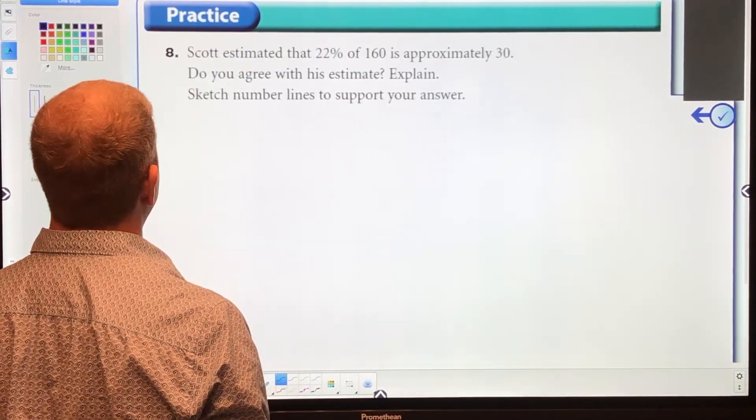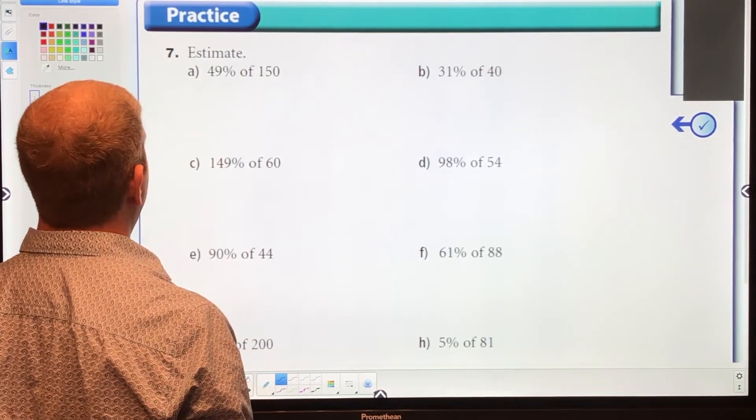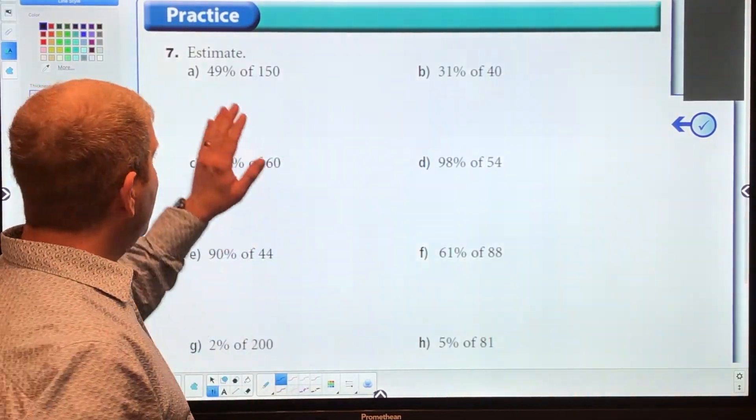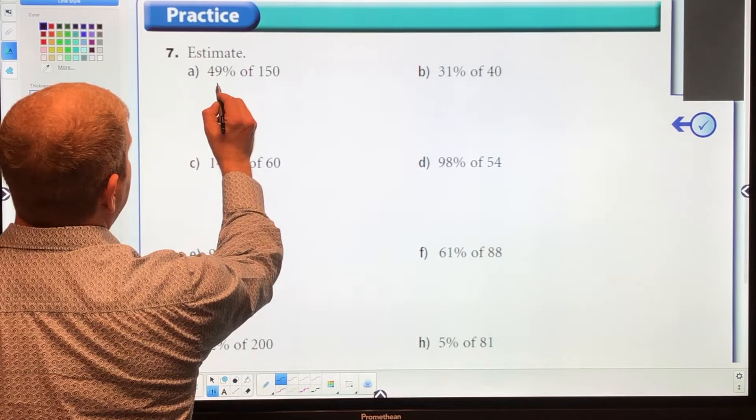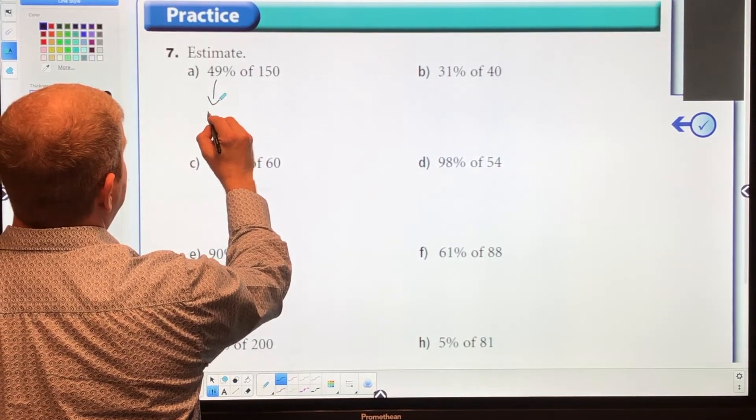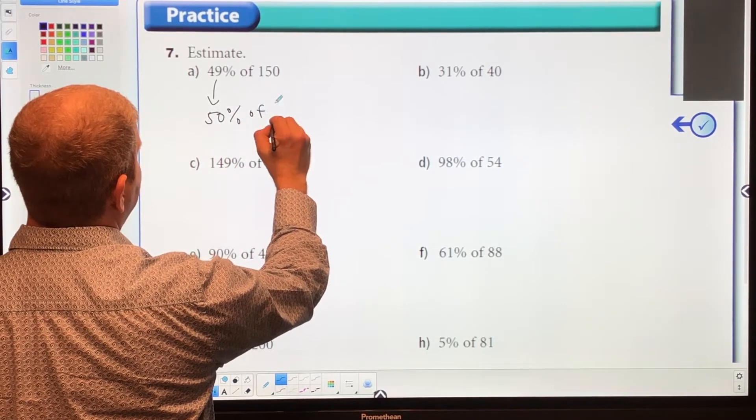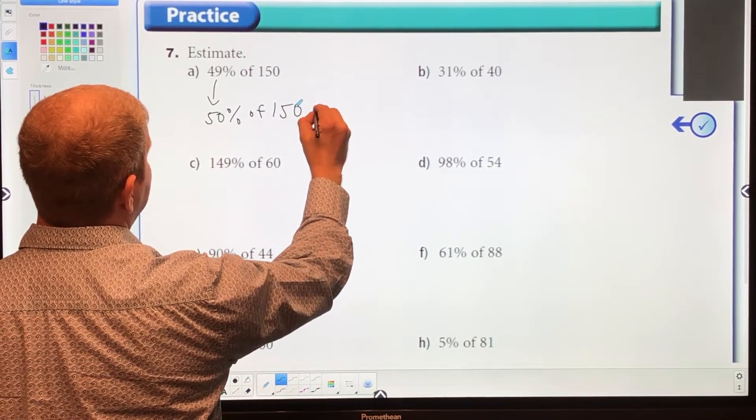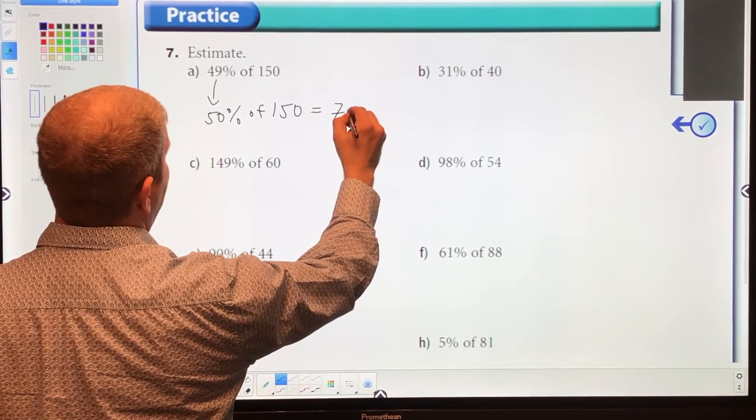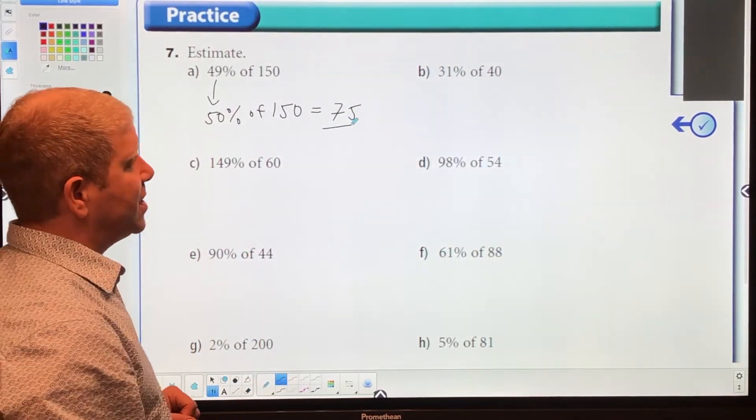Let's go to number 7. Estimation using friendly numbers. While 49% is not friendly, let's turn it to 50%. Now 50% becomes friendly. 50% of 150 is just half, so that's going to equal 75. That's one way to do estimation.